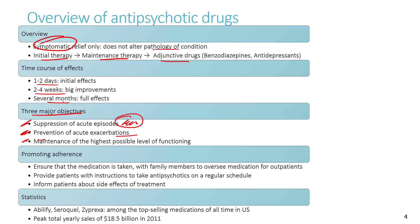Antipsychotic drugs work in the CNS and require adaptation responses in CNS neurons. To encourage patient compliance, family members should oversee medications for outpatients, a regular easy-to-maintain schedule should be provided, and patients must be informed about side effects. Information and education are key.